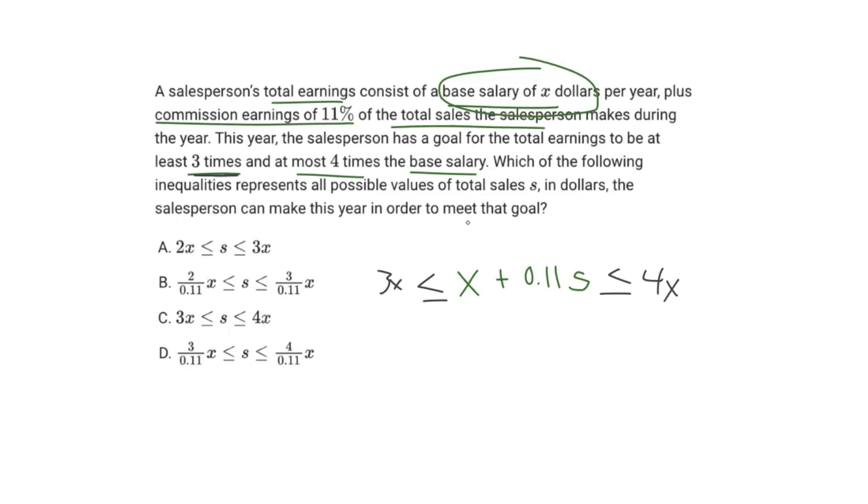All right, so now that we're looking at our answer choices, none of them actually line up. C is similar with 3X and 4X, but it just has S in the middle, whereas we have X plus 0.11S.